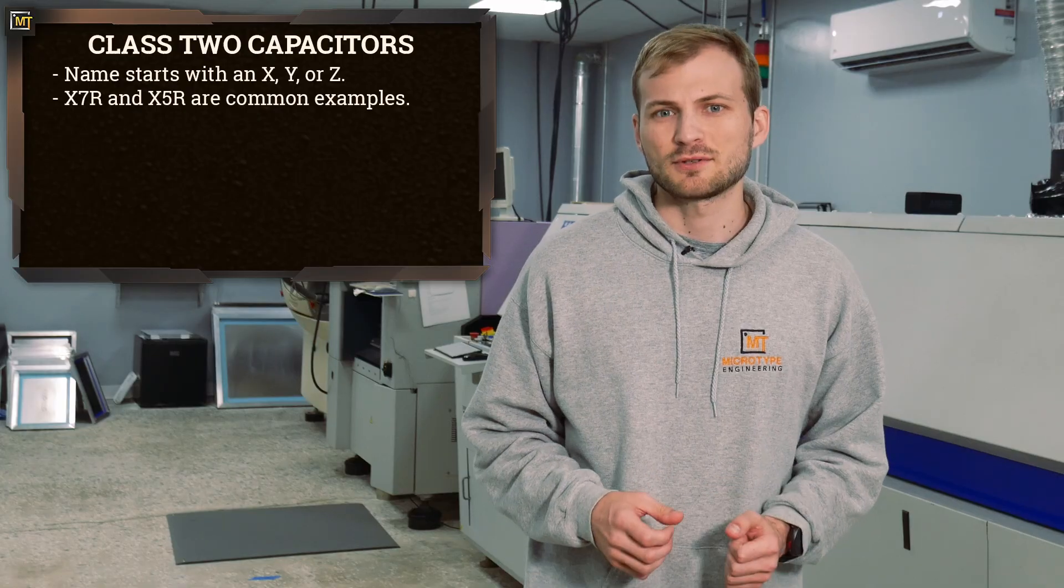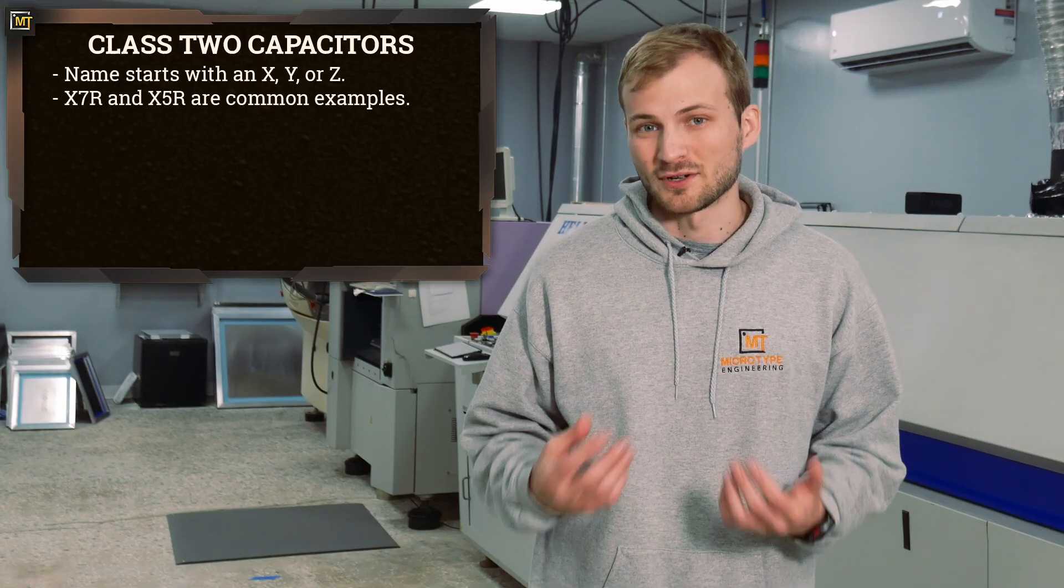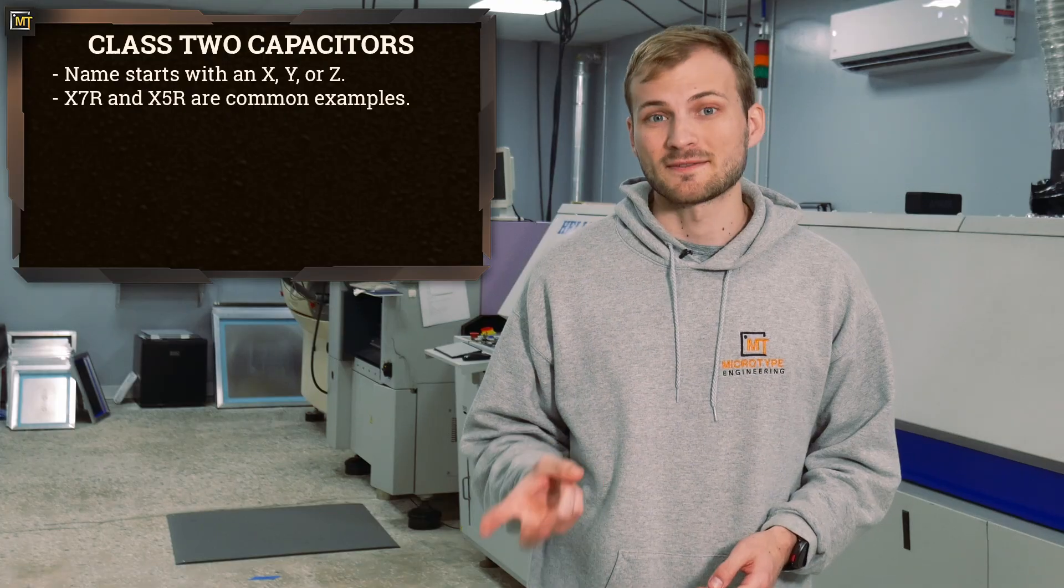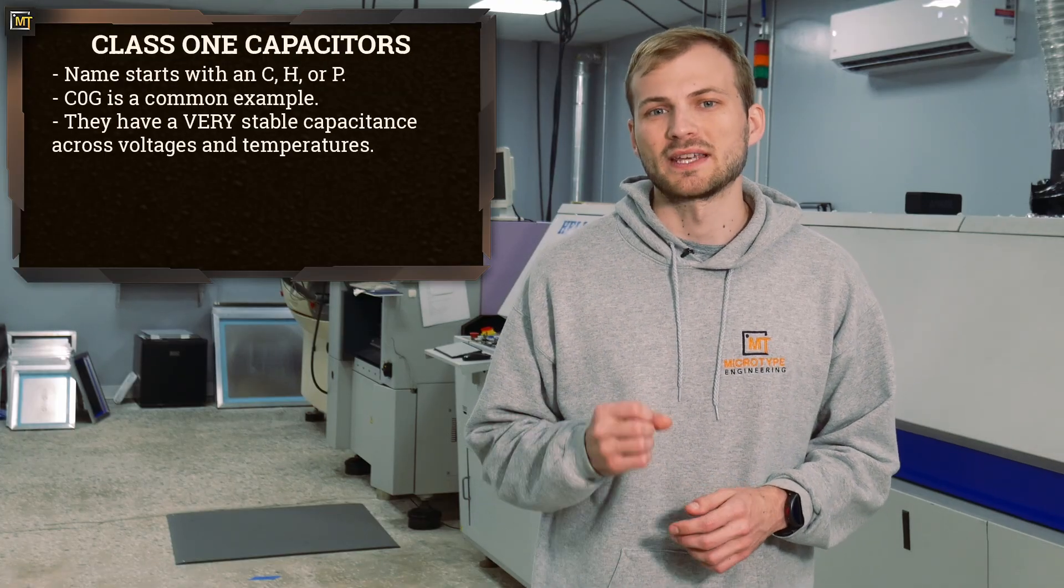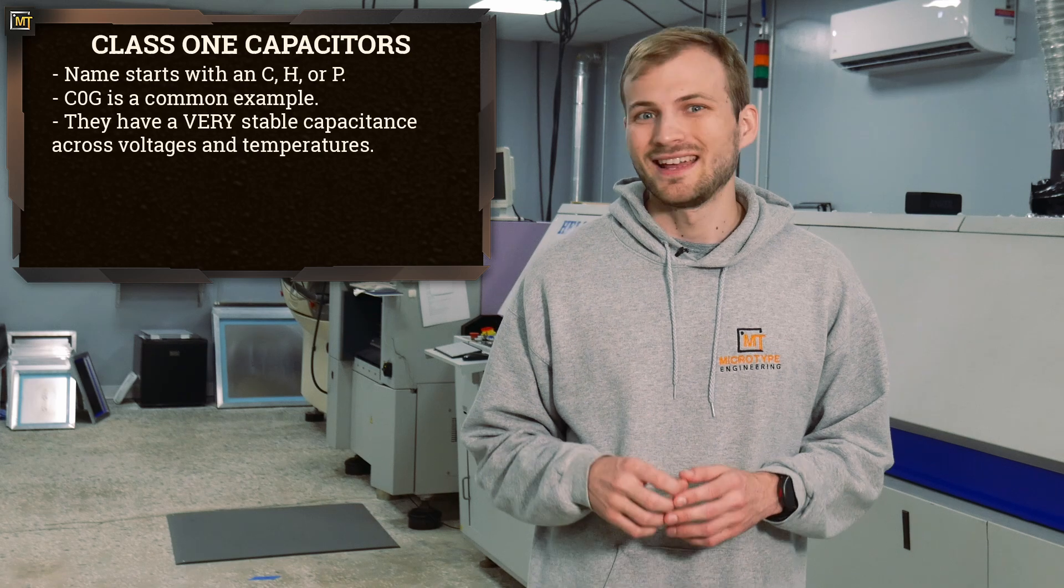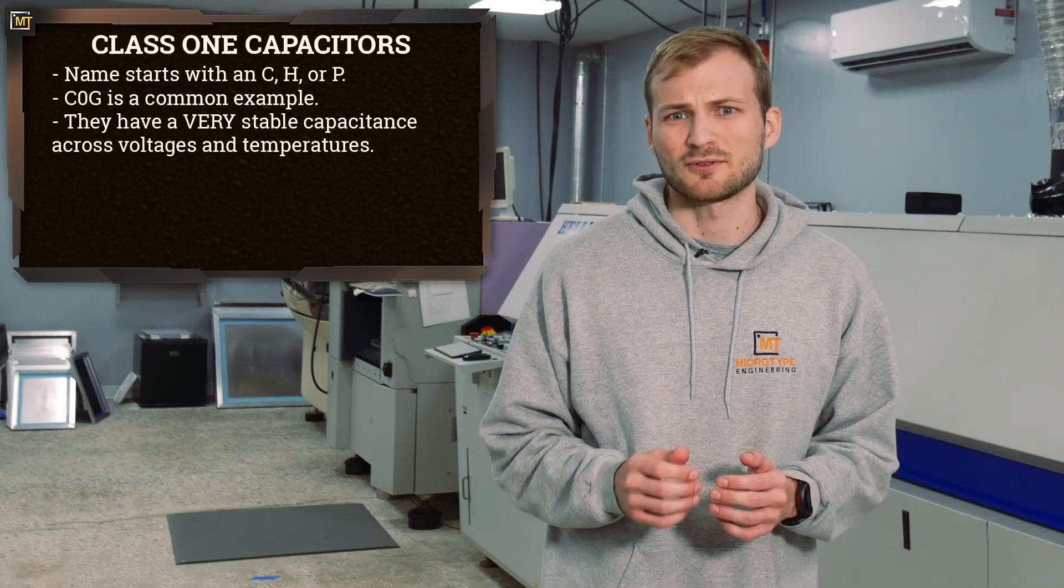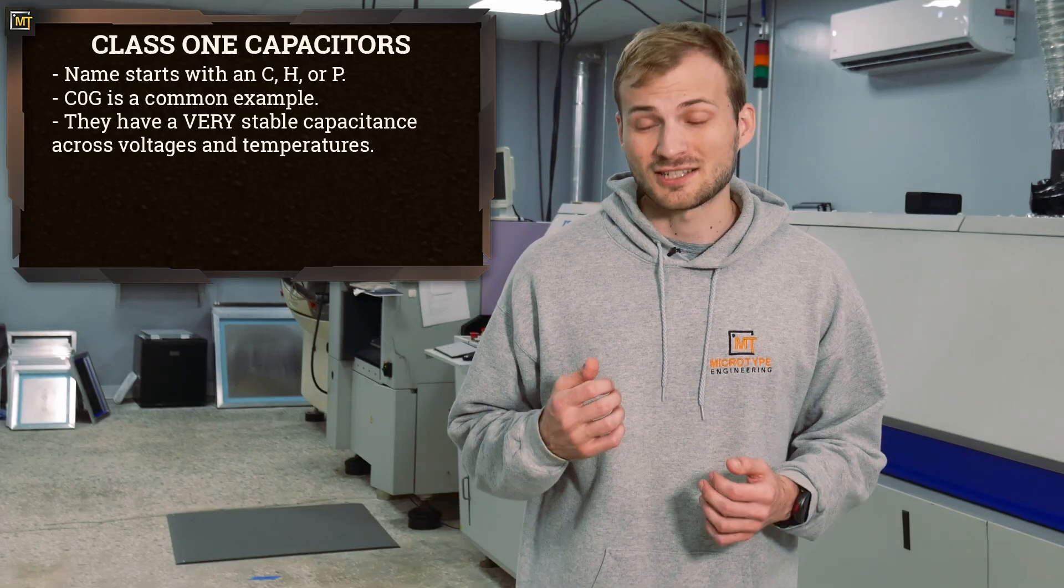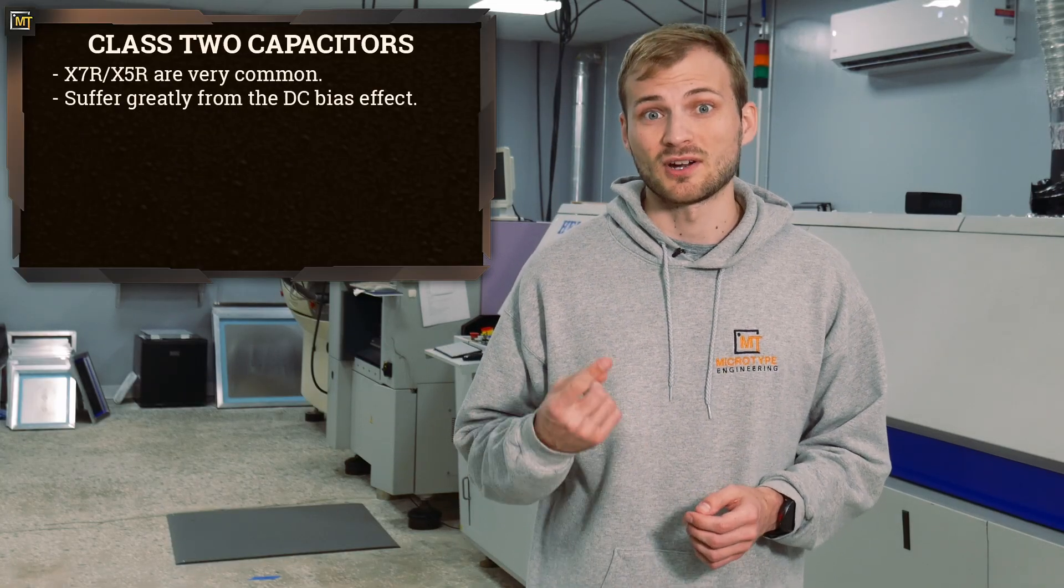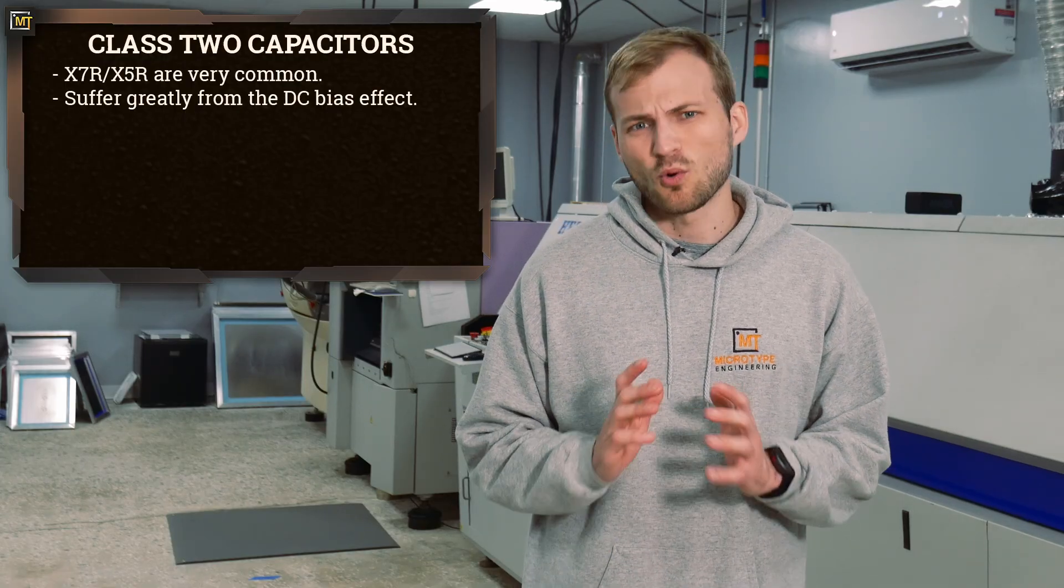This primarily affects class 2 capacitors, which are those that have a temperature characteristic that starts with an X, Y, or Z, for example an X7R or an X5R. Class ones on the other hand typically start with a C, H, or P. A common example is a COG. These are normally used for tuned circuits like oscillators or crystals. Class 2 ceramics, so the X7R and X5Rs, are by far the most commonly used capacitor and I'm only going to focus on them in this video since they really suffer from this issue.